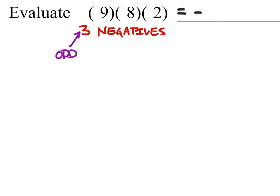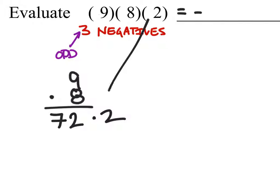So let's go ahead and do first 9 times 8, and when we multiply those, we get 72. And then we would have to multiply that by this 2 right here.